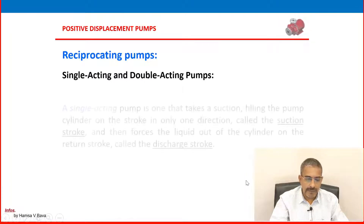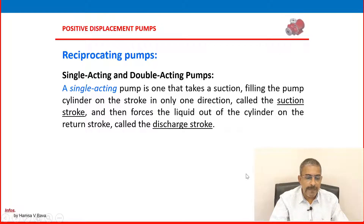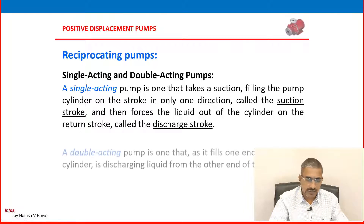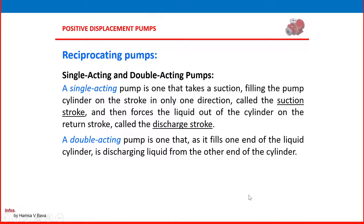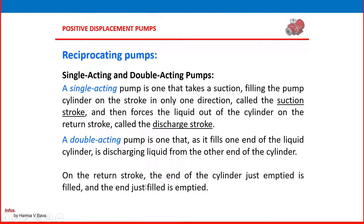For single acting and double acting pumps: a single acting pump takes suction, filling the pump cylinder on a stroke in only one direction called the suction stroke, then forces the liquid out on the return stroke called the discharge stroke. A single acting pump has only one suction and one discharge. A double acting pump fills one end of the liquid cylinder while discharging liquid from the other end. On the return stroke, the end just emptied is filled and the end just filled is emptied.